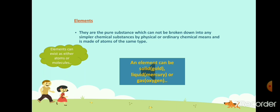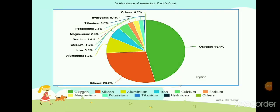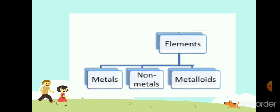The element exists as either atom or molecule. For example, gold exists as atoms, whereas nitrogen always exists as a molecule. Here you can see the relative abundance of various elements in the earth's crust. Till November 2011, a total of 118 elements were identified, out of which 92 were natural. These elements are distributed in the earth's crust either in free state or combined state. As seen in the pie chart, oxygen is the most abundant element in the earth's crust, followed by silicon. All known elements are further divided into metals, non-metals, and metalloids.